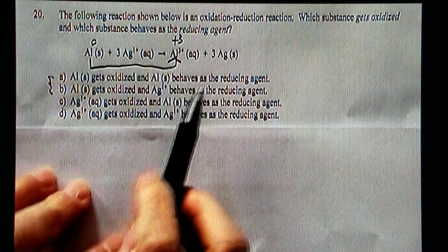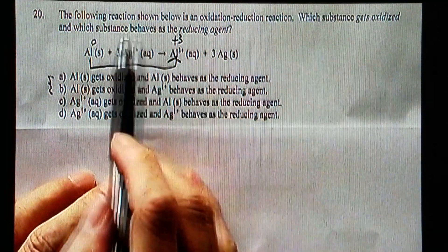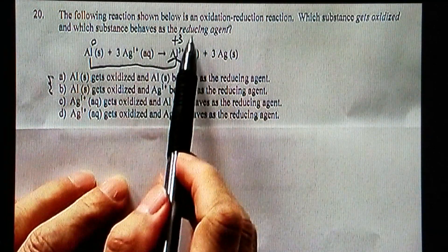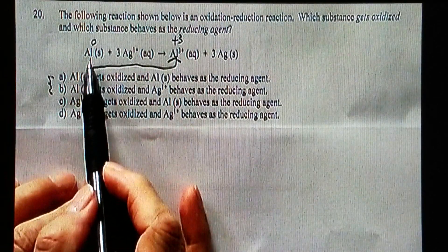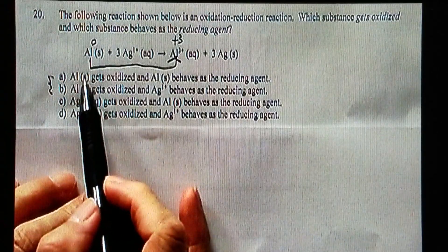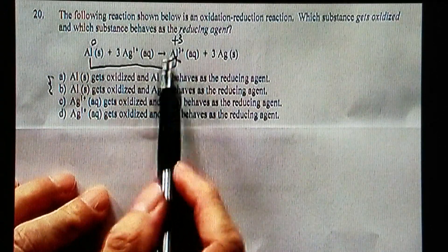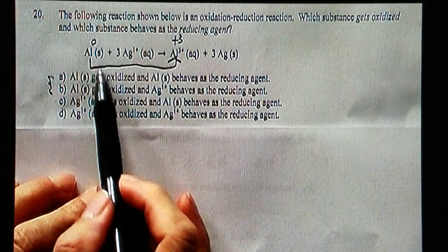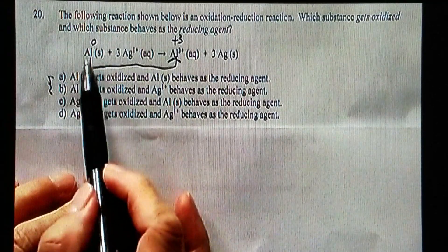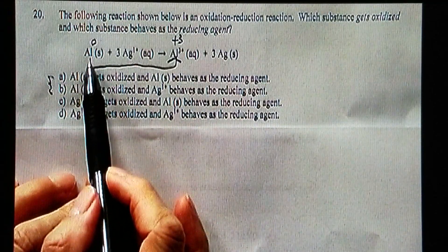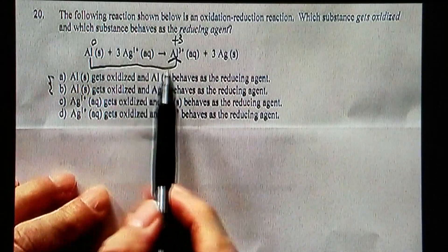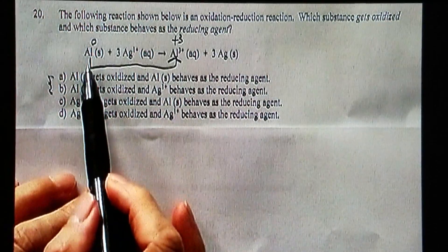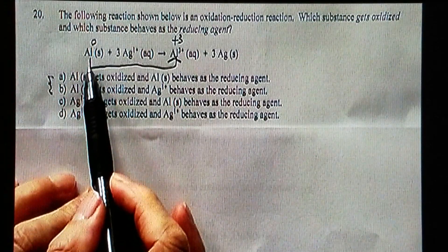Now the second part of the question, which substances behaves as reducing agent? Aluminum zero, it's not aluminum three plus, aluminum zero gets oxidized, then it behaves as a reducing agent. Whatever gets oxidized, it is the reducing agent. If you remember that, you should be fine.